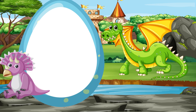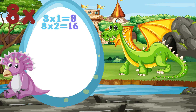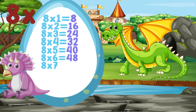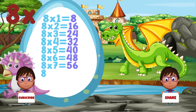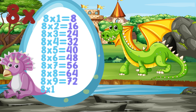Let's repeat it again. 8 times 5 is equal to 40. 8 times 6 is equal to 48. 8 times 7 is equal to 56. 8 times 8 is equal to 64. 8 times 9 is equal to 72. 8 times 10 is equal to 80.